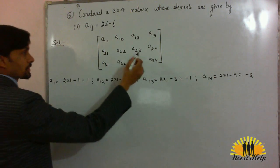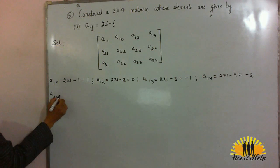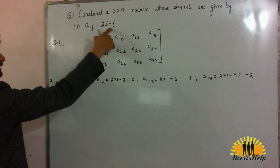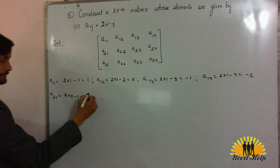Similarly, find the values of these elements. Second row, A21: 2 into i minus j. Here i is 2 and j is 1. And 4 minus 1 will be 3.